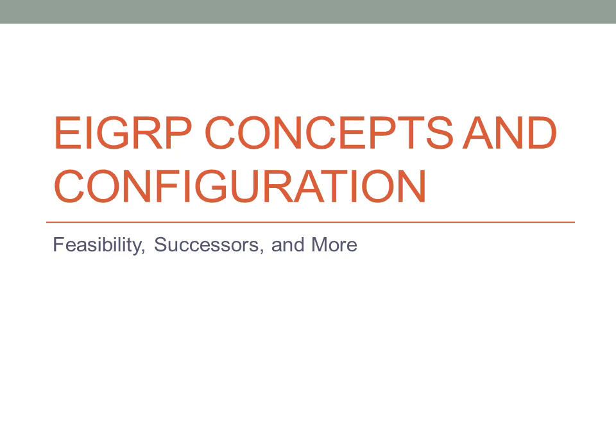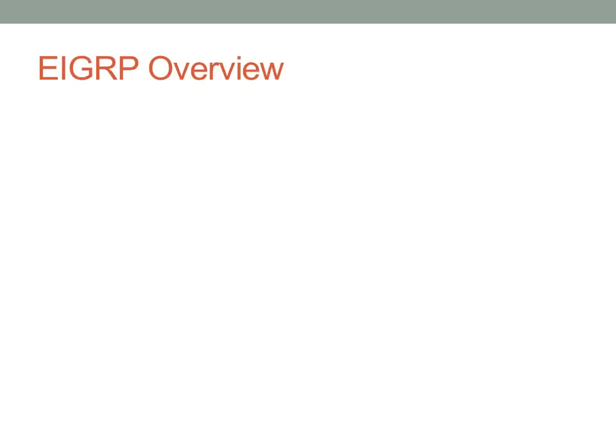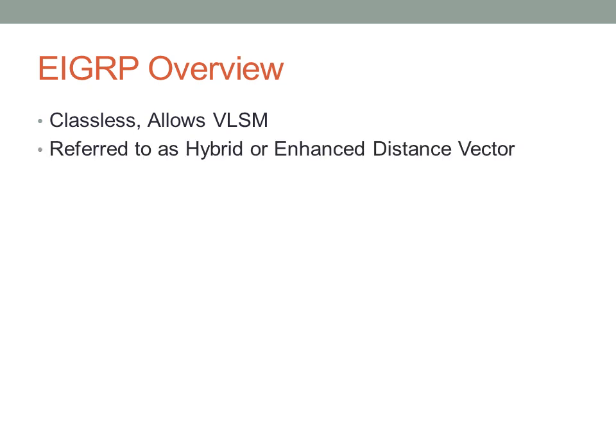The next routing protocol we're going to talk about is EIGRP. EIGRP is a classless routing protocol, much like OSPF. It allows VLSM, just like OSPF. It's referred to as a hybrid routing protocol, or more accurately, an enhanced distance vector protocol.